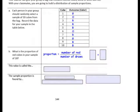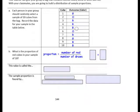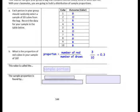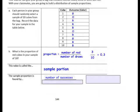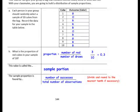What is the proportion of red cubes in your sample of 10? The proportion is the number of red compared to the number of draws. Counting the reds, we have 1, 2, 3 — so we have 3 red out of 10 draws. 3 divided by 10 is 0.3. This value is called the sample proportion. The sample proportion is found by writing the number of successes — in this case the number of red — over the total number of observations, in this case 10 draws. Then you divide and can round to the nearest tenth if necessary.